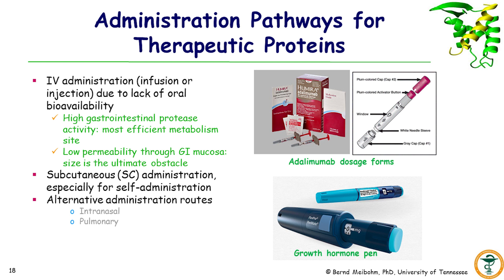The alternatives used are IV administration or subcutaneous administration. Subcutaneous administration is especially popular for self-administration, with examples including adalimumab in a single injection pen and a FlexPro pen for human growth hormone. Alternative routes such as intranasal administration and pulmonary inhalation have been explored but remain niche pathways. The vast majority of therapeutic proteins are given either by intravenous administration or by subcutaneous administration.